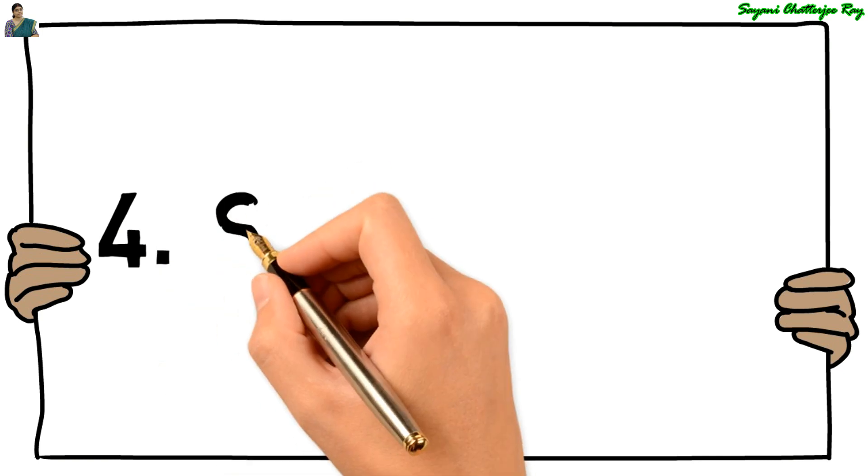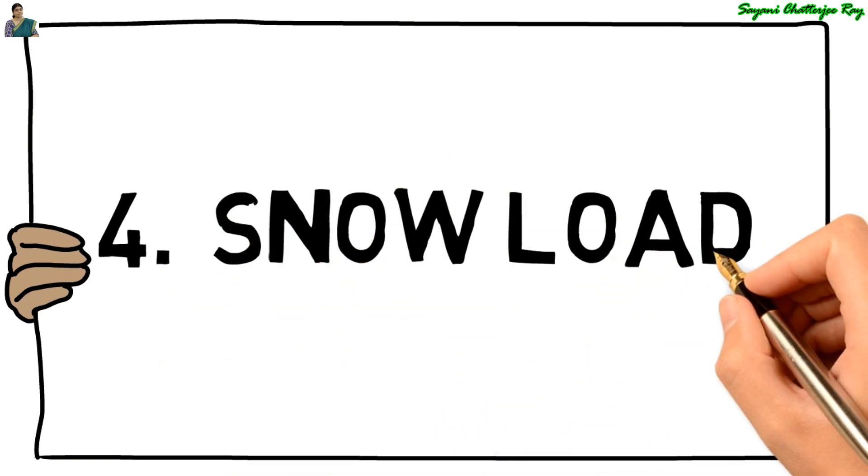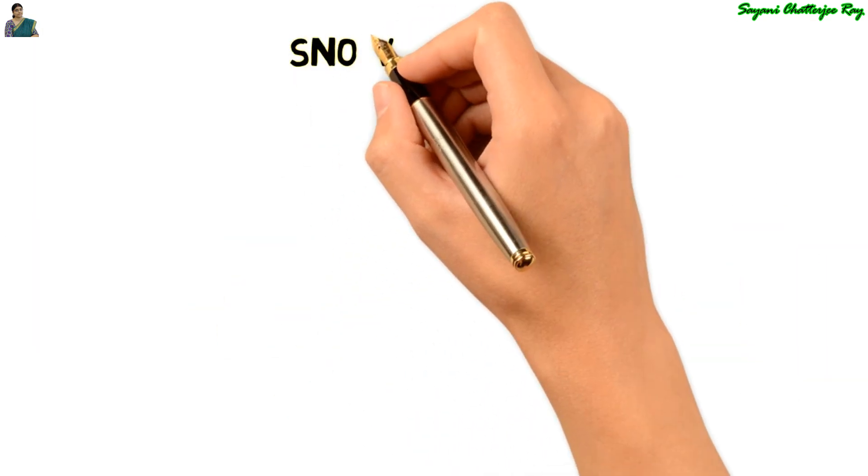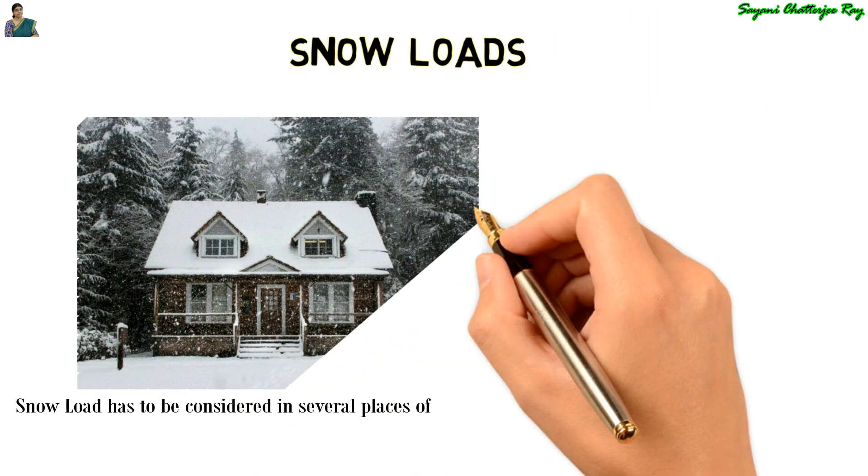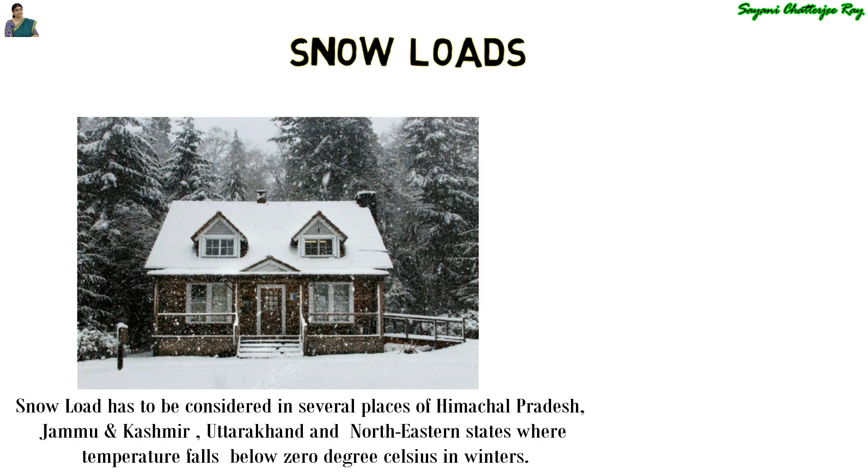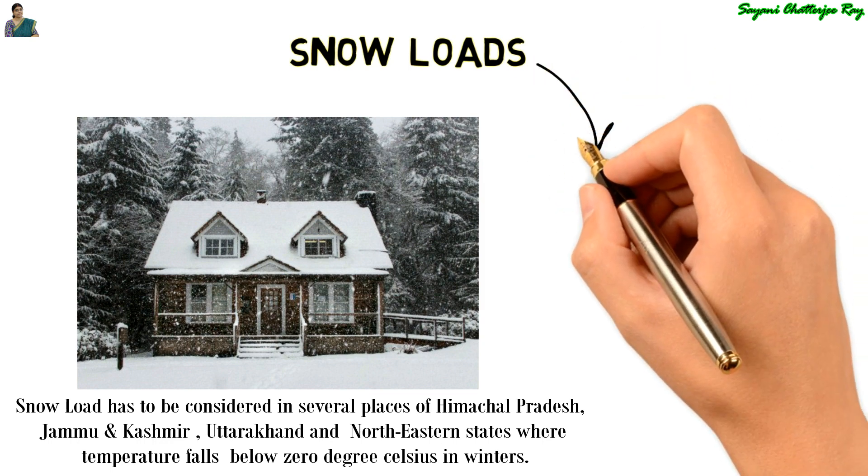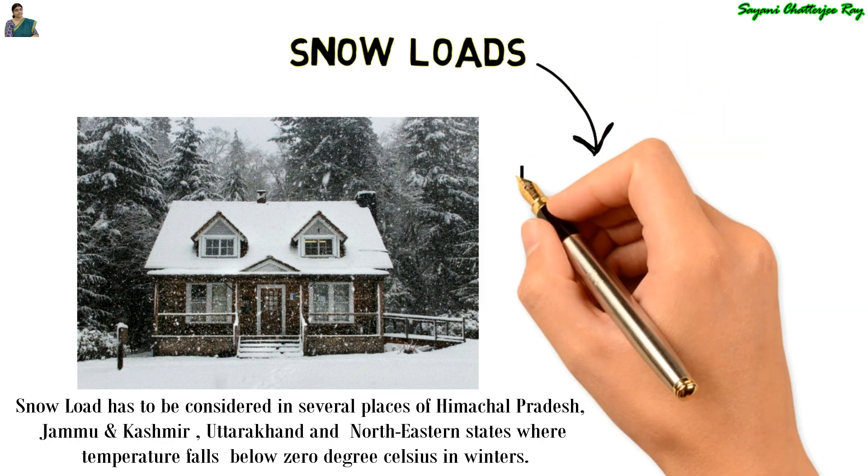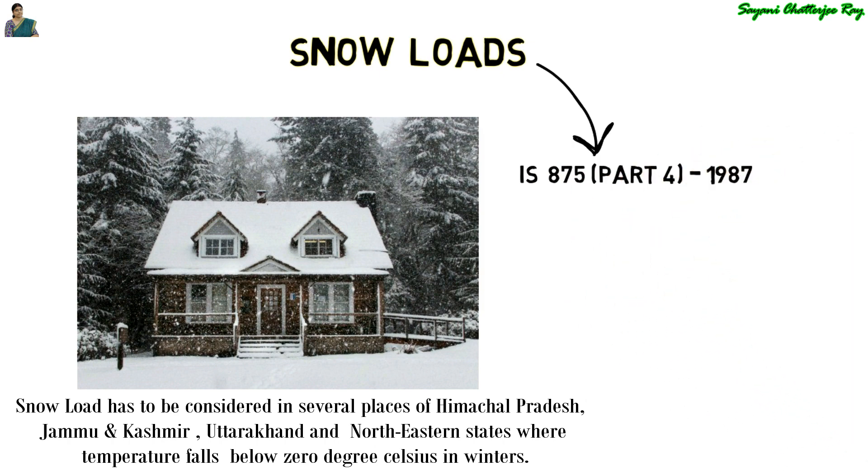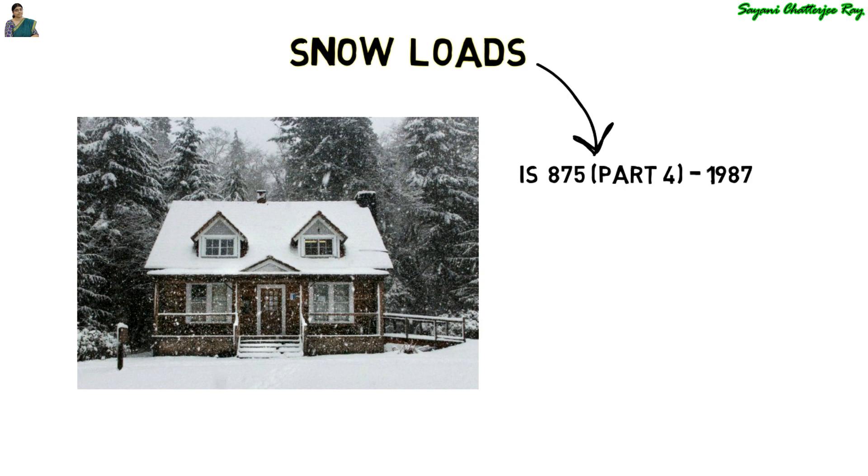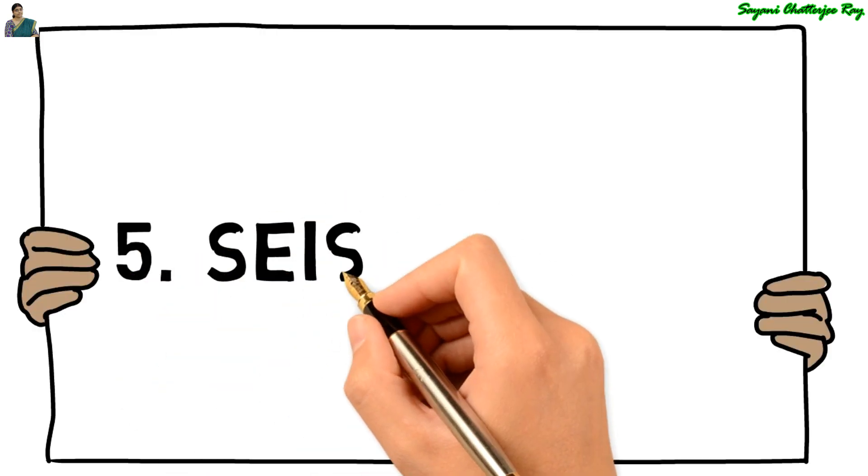The fourth type of load is snow load. The buildings which are located in the regions where snowfall is a very common criteria, such buildings in those areas are to be designed for snow load. The IS code, IS 875 part 4 1987 deals with the snow load on roofs of the building.